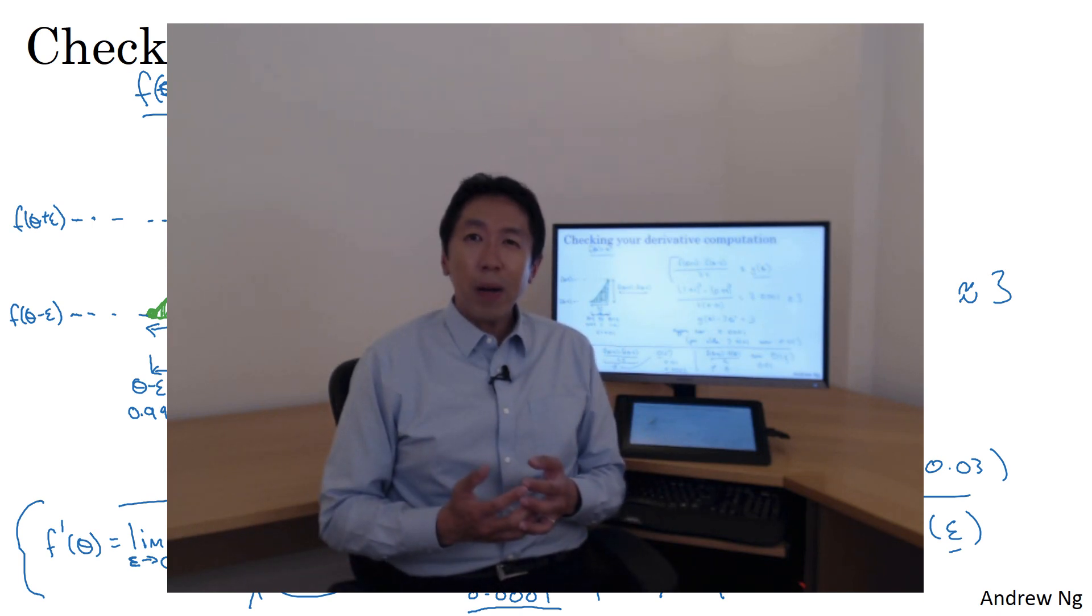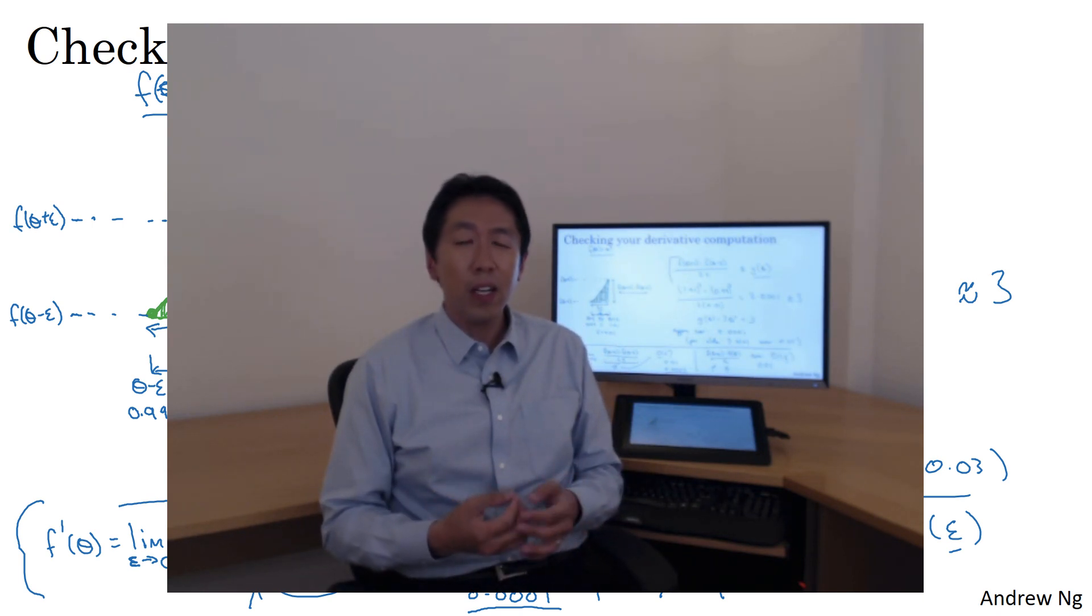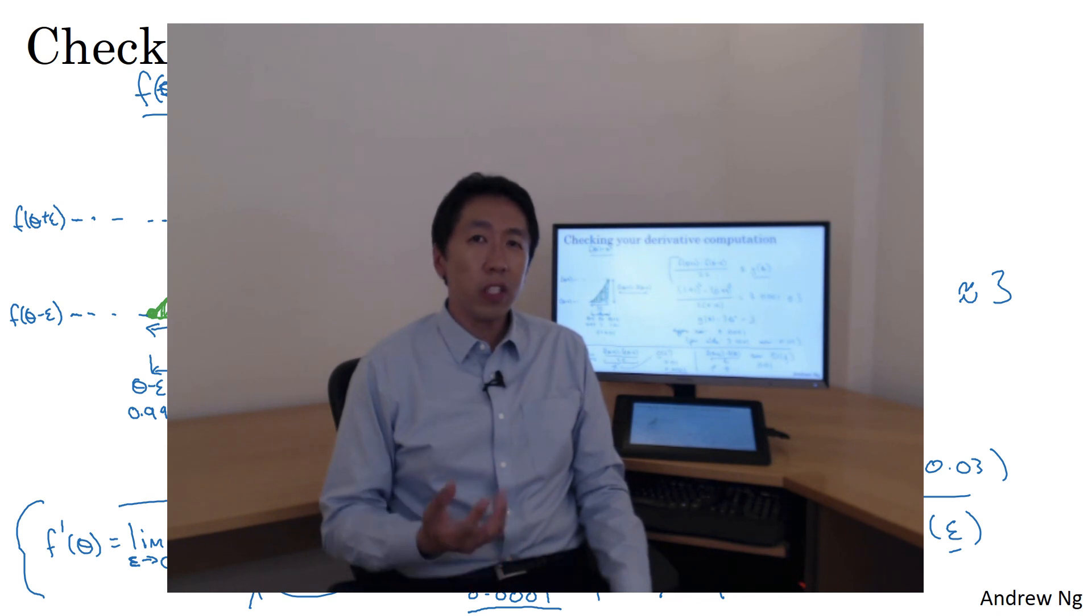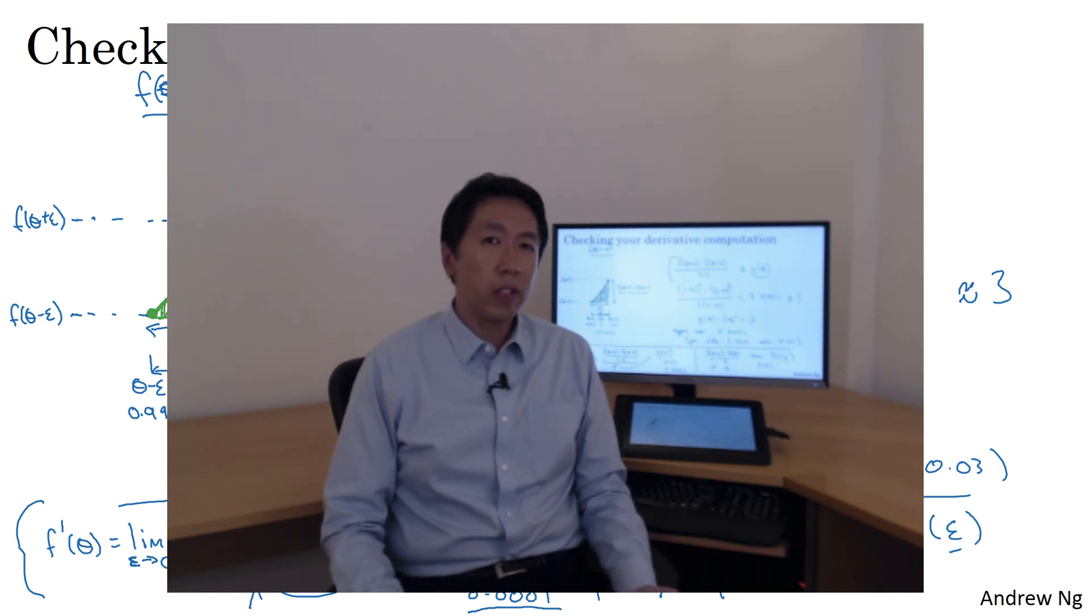So you see how by taking a two-sided difference, you can numerically verify whether or not a function g, g of theta that someone else gives you is a correct implementation of the derivative of the function f. Let's now see how we can use this to verify whether or not your back propagation implementation is correct or if there might be a bug in there that you need to go in and tease out.